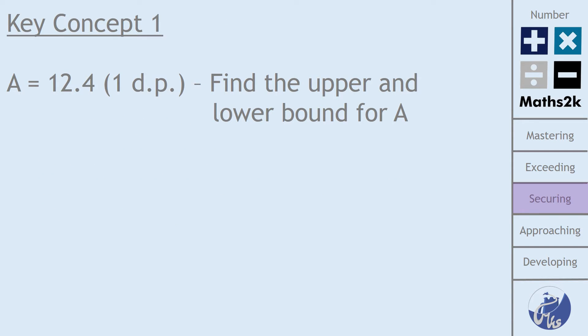So the first key concept that I want to go through is about how to find the upper and lower bound for a given value after it has been rounded. So in this example here we've got the value of A being 12.4 to one decimal place. And the way in which I'm going to explain what the upper and lower bounds are going to be is by using a number line.